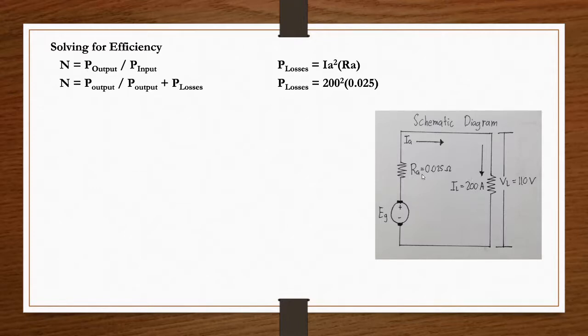Here our armature load is 200 ampere. Our armature resistance is 0.025. So 200 squared times 0.025. Our power losses is 1000 watts.